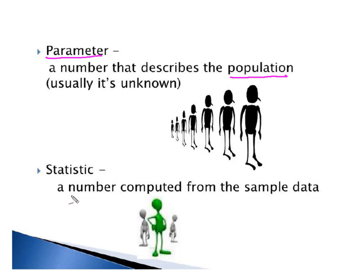But when we compute a number or a numerical measurement from sample data what we actually generate is a statistic. So just remember the mnemonic, right? Populations produce parameters and samples produce statistics.